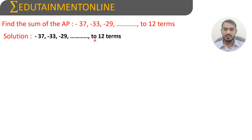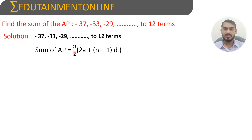We need to find the sum of 12 terms of this AP. The next terms would be -29 + 4 = -25, then -21, and so on. We use the sum formula: Sn = n/2 × (2a + (n-1)d), where n is the number of terms, a is the first term, and d is the common difference. Here n = 12.